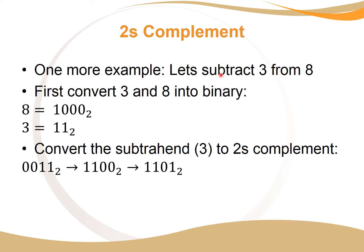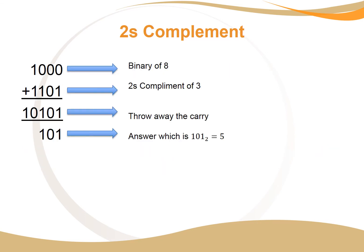One more example: let's subtract three from eight. We already know binary for eight. We convert all numbers to binary — 1000 is eight, and 0011 is three. I've added two zeros to make the numbers the same number of bits. Now we convert three into twos complement: 0011 in ones complement becomes 1100, then we add one to get the twos complement. With the binary of eight and the twos complement of three, we add them, throw away the carry, and we're left with 101, which is the answer.